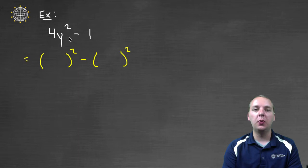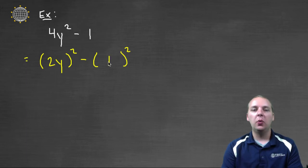What squared gives us 4y²? It would be (2y)². 2y times 2y gives us 4y². And 1² is 1. So our a is 2y, and our b is 1.